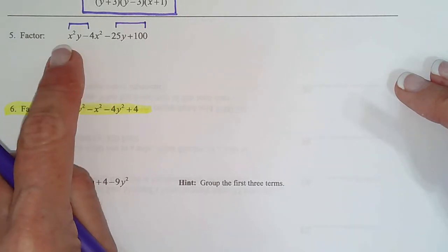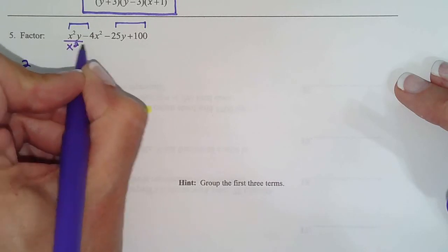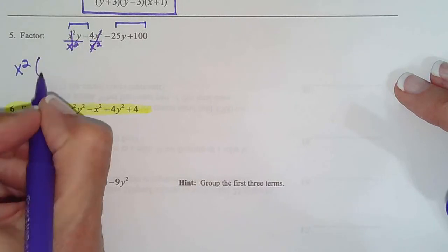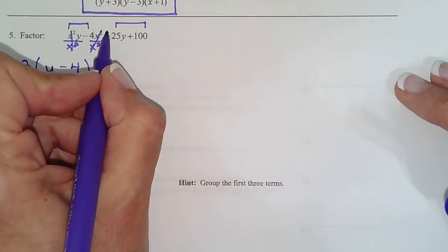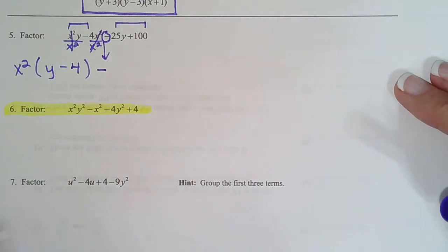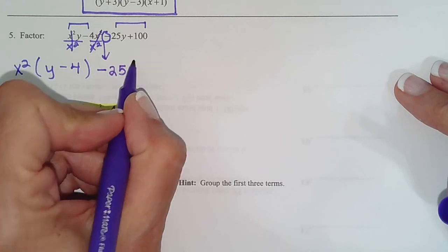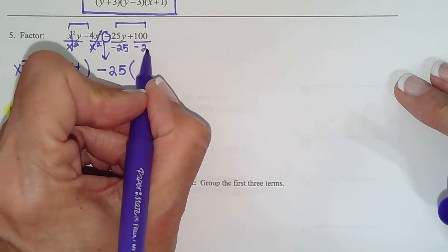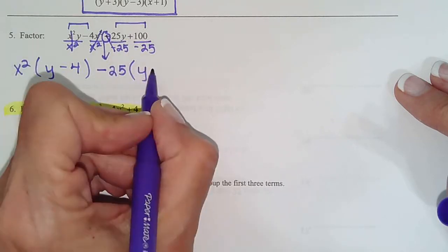So what's common here? x squared. So we take the x squared out and we get y minus 4. Then we always have to bring this sign down so we can see our next GCF is going to be negative. And it's going to be negative 25.